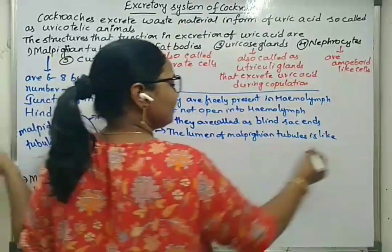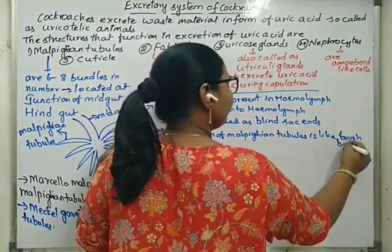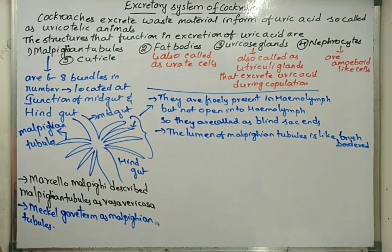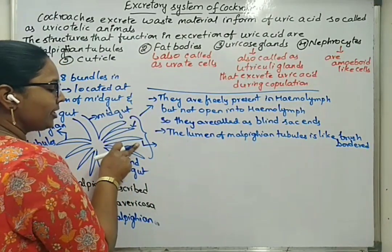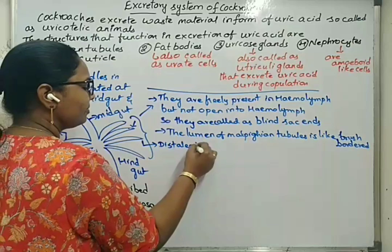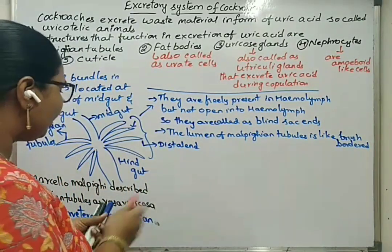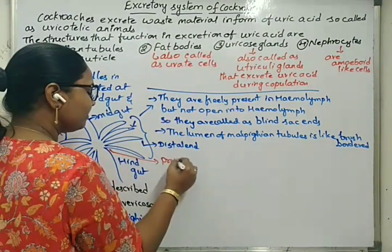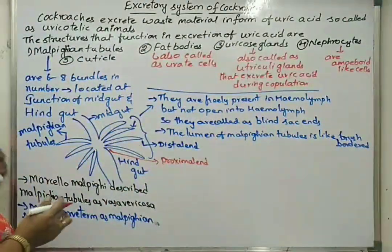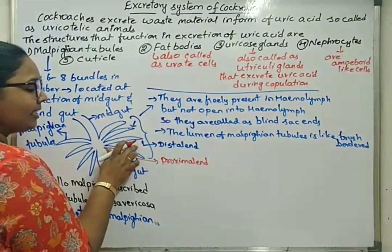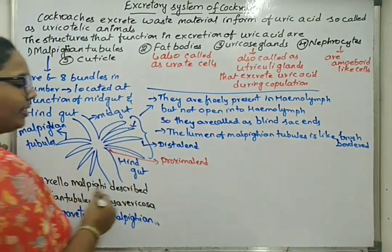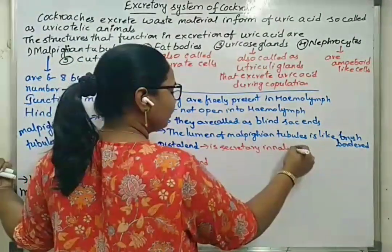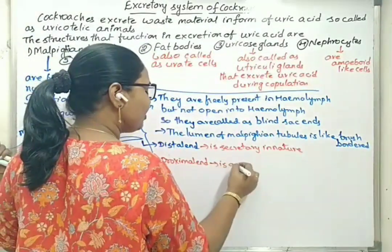The lumen of Malpighian tubules is lined with brush border epithelium. The end that is freely dispersed into the hemolymph is called the distal end. The end near the midgut is called the proximal end. The distal end is secretory in nature, and the proximal end is absorptive in nature.